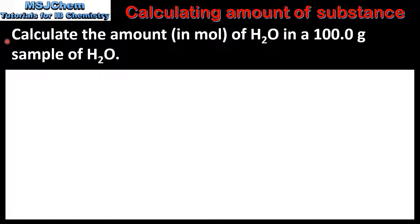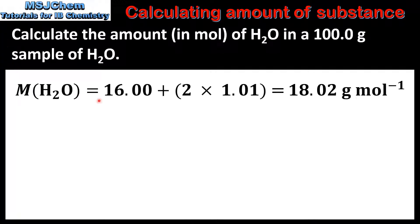In the next example we'll calculate the amount in moles of H₂O in a 100 gram sample. The first step is to determine the molar mass of H₂O. The relative atomic mass of oxygen is 16 and for hydrogen it's 1.01. So for the molar mass we have 16 plus 2 times 1.01, which gives us 18.02 grams per mole.